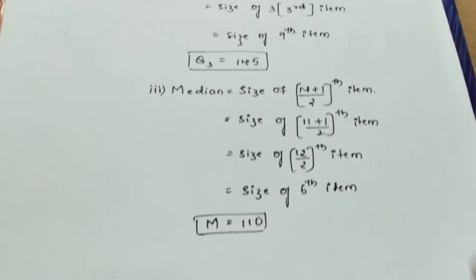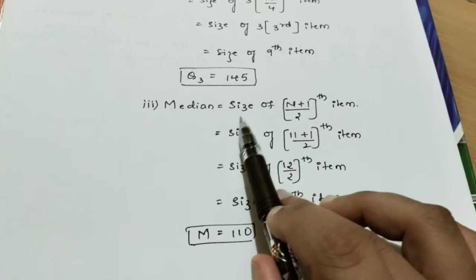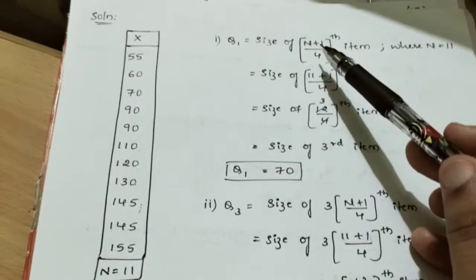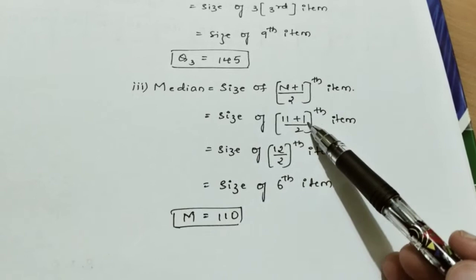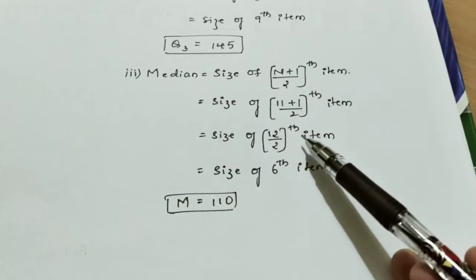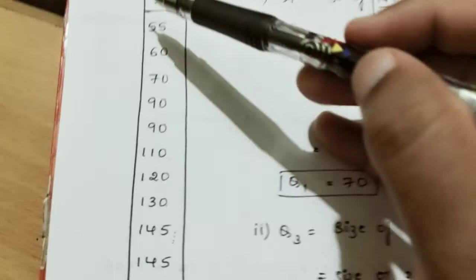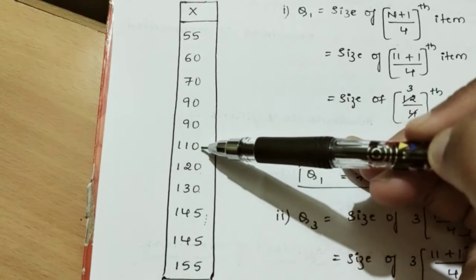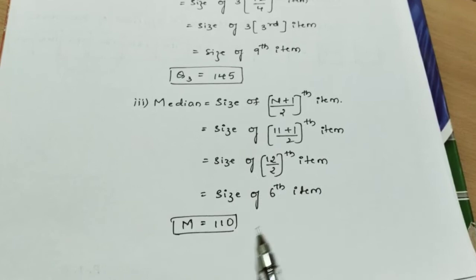To find the median, we use size of (n+1)/2th item. With n = 11: size of 12/2 = 6th item. Counting to the 6th item, it is 110. So the median value is 110. Now we have Q1 = 70, Q3 = 145, and median = 110.